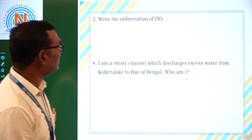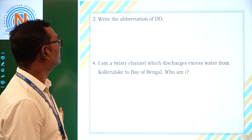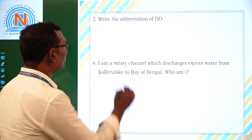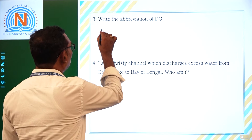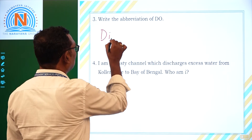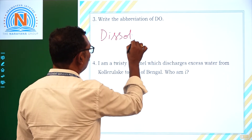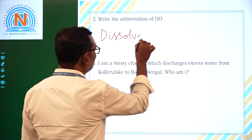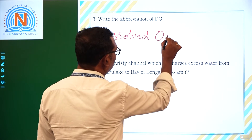Write the abbreviation of DO. DO stands for Dissolved Oxygen.